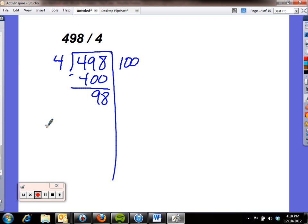So I think, how many times can 4 go into 98? If I do 10 fours, that's 40. I could double that and do 20 fours, and that's 80. That will work nicely. 20 fours is 80. Subtract.